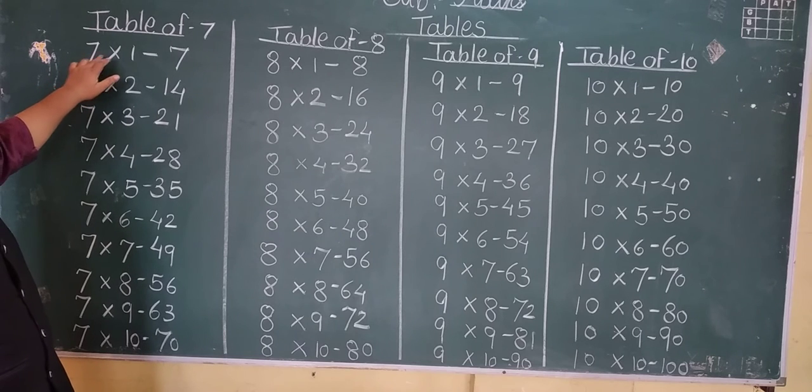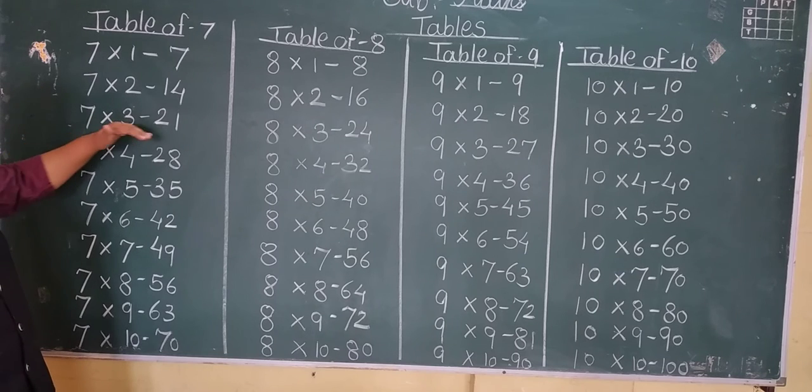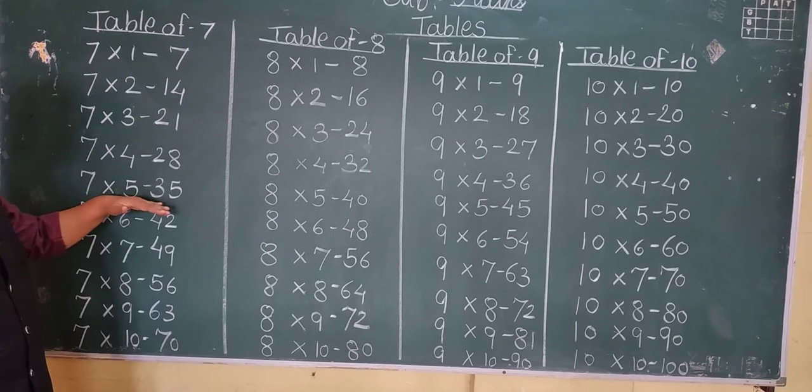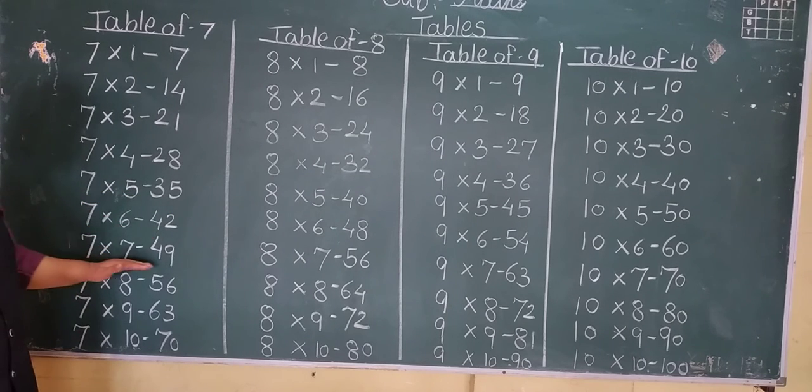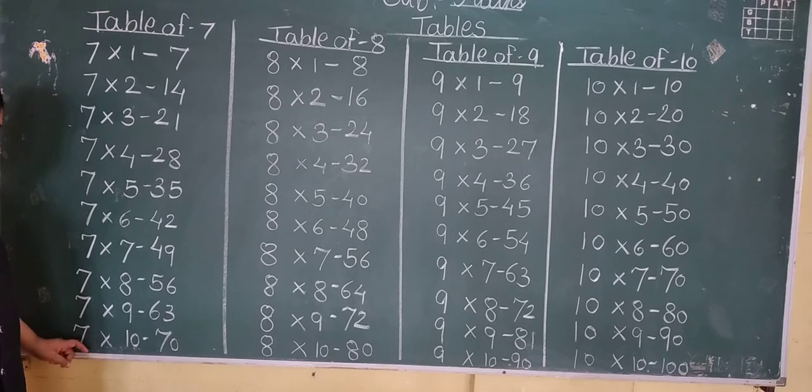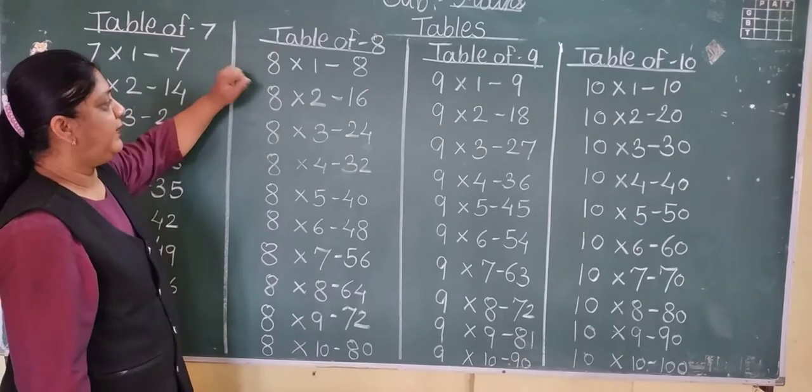Okay. Then say: 7 1s are 7, 7 2s are 14, 7 3s are 21, 7 4s are 28, 7 5s are 35, 7 6s are 42, 7 7s are 49, 7 8s are 56, 7 9s are 63, 7 10s are 70. Now table of 8.